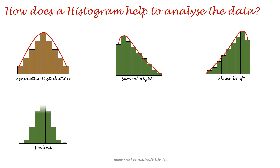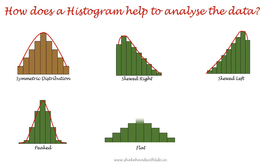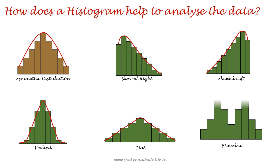When the height of the histogram is above normal, then this implies the data has peak distribution. When the height of the histogram is below normal, then this implies the data has flattened distribution. When there are two vertical bars having equal height but taller than the rest of the vertical bars, then this implies the data has bimodal distribution.